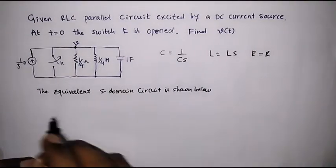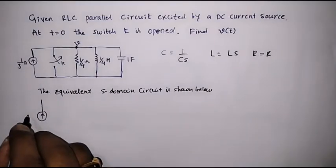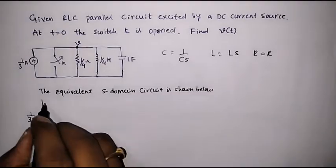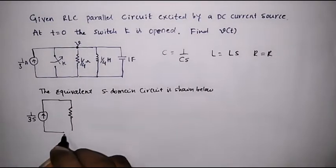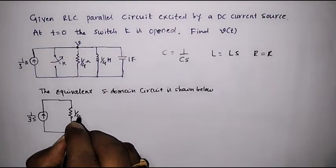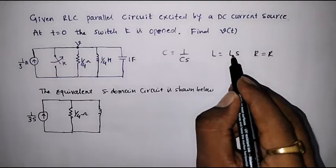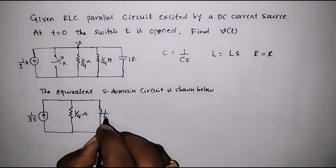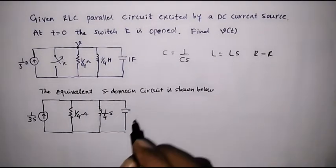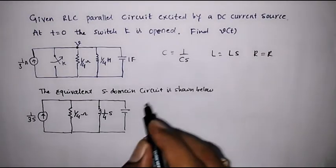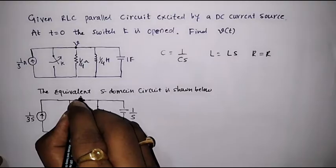The equivalent S-domain circuit is shown below. The magnitude of the current source is 1 by 3S. The switch is open. The resistor is kept as it is — its value is 1 by 4 ohm. The inductor is replaced by L into S, so the inductor value becomes 1 by 4 into S, which is S by 4. The capacitor is replaced by 1 upon C into S. Since C equals 1, it becomes 1 by S. So here we have V of S.